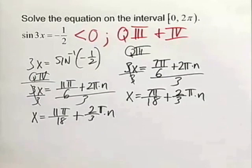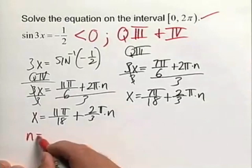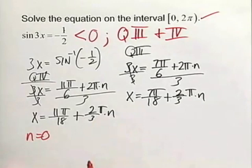Now we have to address the fact that the problem wants us to find those solutions from 0 to 2 pi radians. And we'll do that by plugging in values for n. And we'll start with n equals 0 for this particular problem. So in doing that, 0 times anything makes that disappear. For n equals 0,